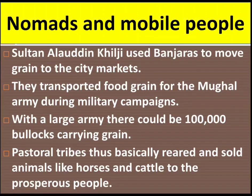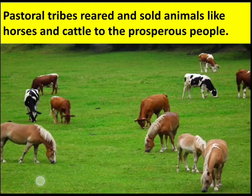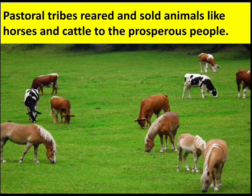Sultan Alauddin Khilji used Banjaras to move grain to the city markets, and they transported food grain for the Mughal army during military campaigns. With a large army, there could be one lakh bullocks carrying grain. Pastoral tribes basically reared and sold animals like horses and cattle to the prosperous and rich classes in ancient times.